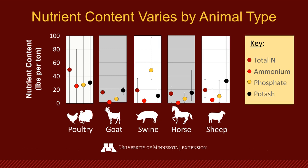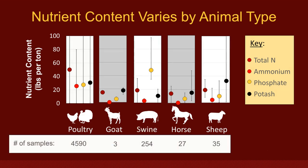Overall, each species has quite a bit of variability in their nutrient content. Some of this has to do with the number of samples in the graphic. Along the bottom you'll see the number of samples received in this data set. But the moral of the story is: get your manure sampled and do not rely on book values. This will be a much more accurate way for determining how much manure you want to apply to your land.